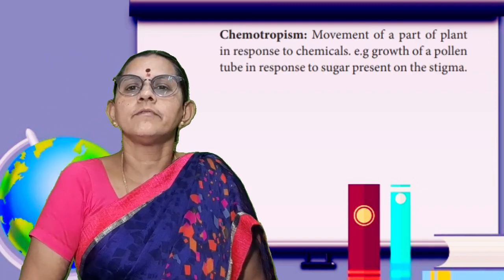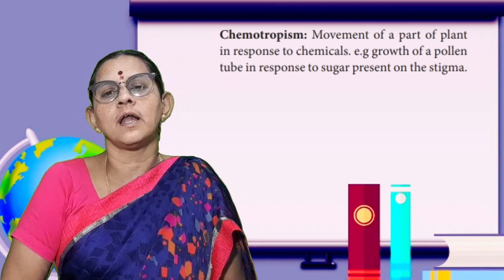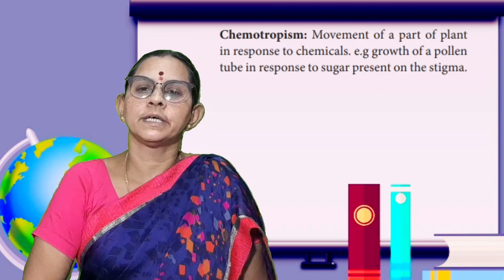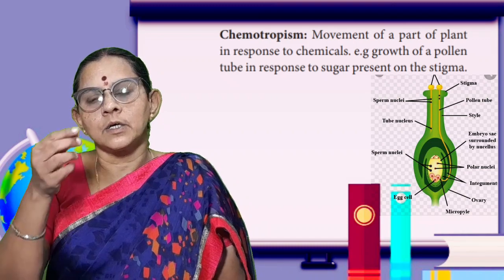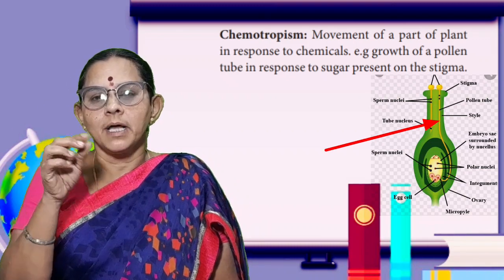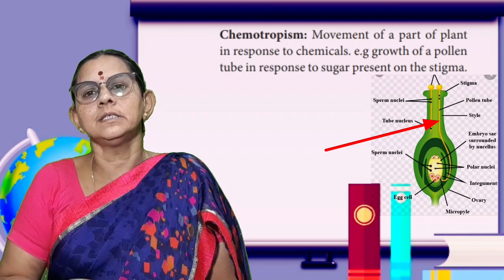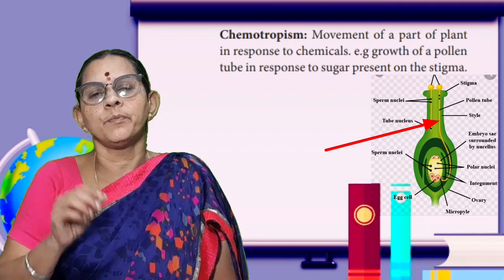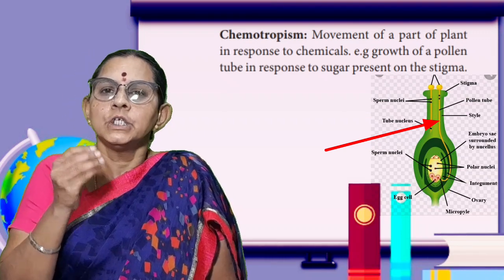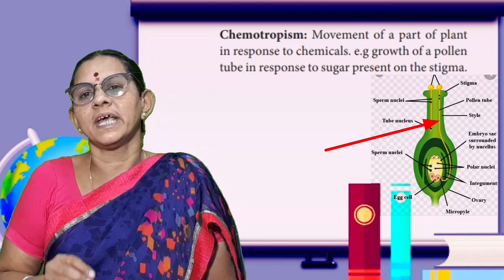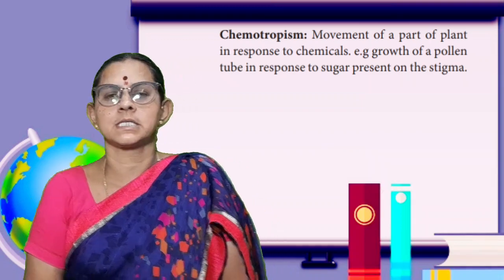Next is chemotropism. For example, pollen grains are deposited on the stigma, and the pollen tube grows through the style to reach the ovules — only because of chemotropism. The growth of the pollen tube in response to the chemicals from the stigma is called chemotropism.